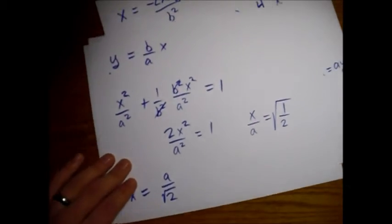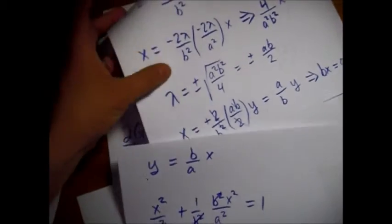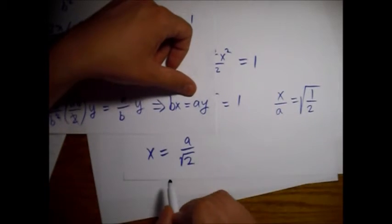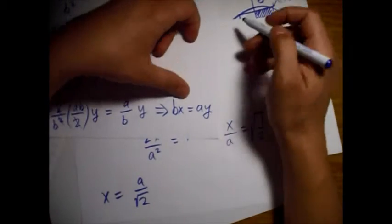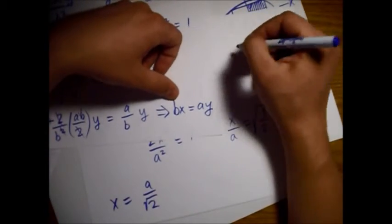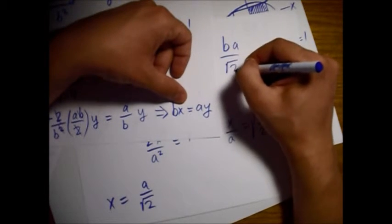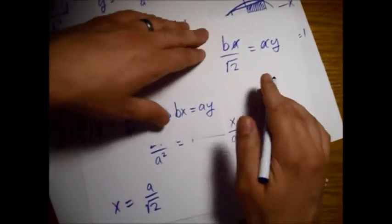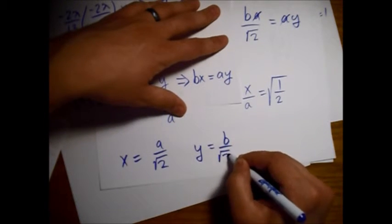Now solving for y: plugging x = a/√2 into bx = ay gives b·(a/√2) = a·y. The a's cancel, so y = b/√2.